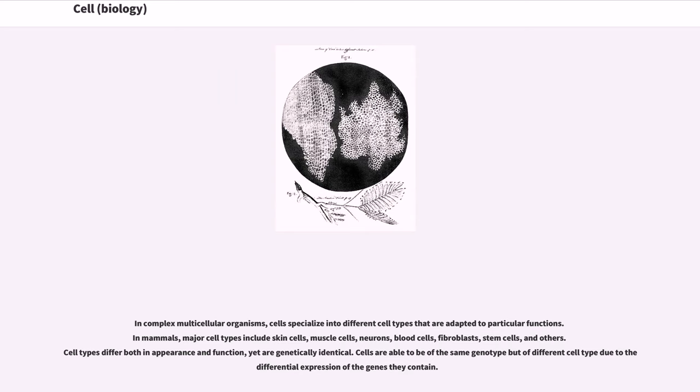In mammals, major cell types include skin cells, muscle cells, neurons, blood cells, fibroblasts, stem cells, and others. Cell types differ both in appearance and function, yet are genetically identical.